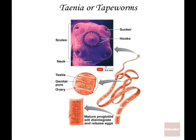Here's a picture of Taenia. You can see these proglottids — in each proglottid we have both an ovary and a testes, and then a collection of eggs. When they drop off, they're actually a self-contained organism. You can see the scolex, which has both hooks and suckers, and then the neck region, which is really where the new segments get added on. As they get added on, the organism gets longer and longer.